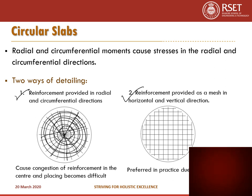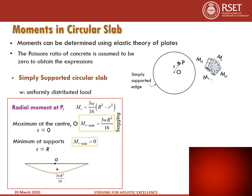A second way of detailing is usually adopted: reinforcement is placed in the horizontal and vertical directions like a mesh. This is preferred in practice. The moments in a circular slab are determined using the elastic theory of plates — the derivation is out of scope — and Poisson's ratio of concrete is assumed to be 0 to obtain a simplified expression.